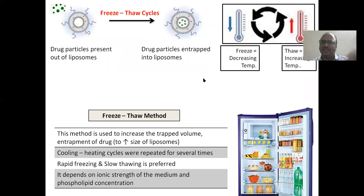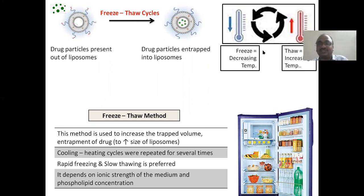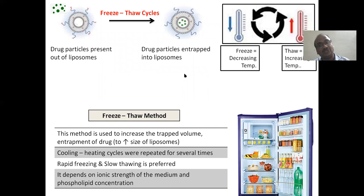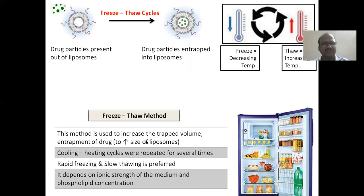Freeze-thaw technique: freeze means decreasing the temperature, thaw means rising the temperature. These cycles — freeze, thaw, freeze, thaw — are used repeatedly. Through this number of freeze-thaw cycles, your drug will be encapsulated. This method can also be used as an active loading method: first prepare empty liposomes, put the drug in, then go through the freeze-thaw cycles so the drug gets uploaded. This method is also used to increase the size of liposomes — very, very important for all competitive examinations.